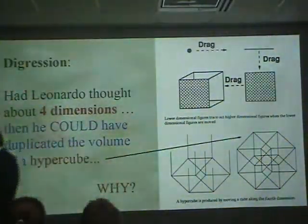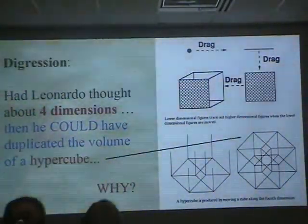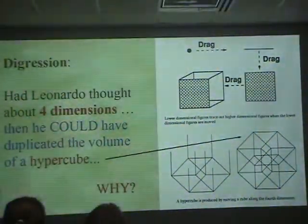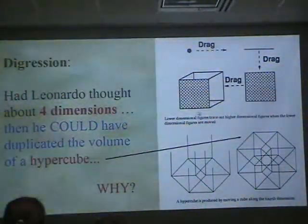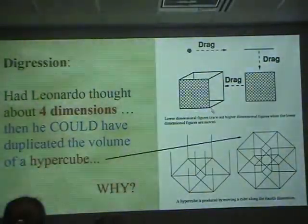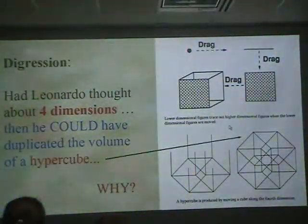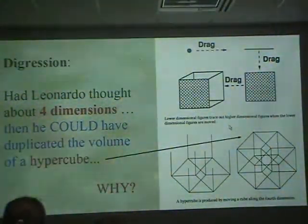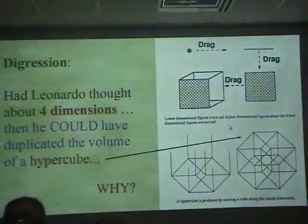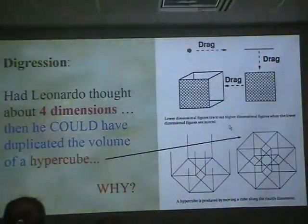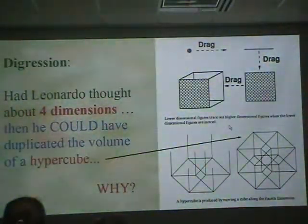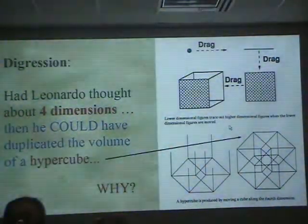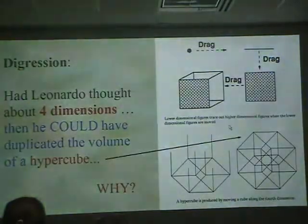So to get a hypercube, you create a fourth axis, and you drag your cube along that fourth axis — that's a hypercube. We can't see it, but that doesn't mean it doesn't exist. It exists. The mathematician has said so, and it really exists.